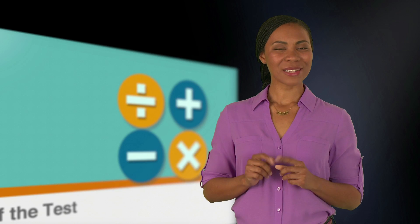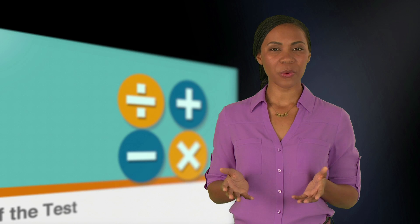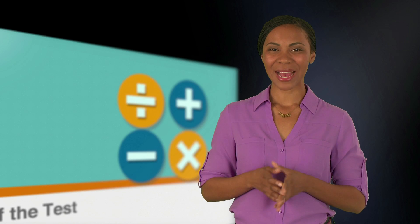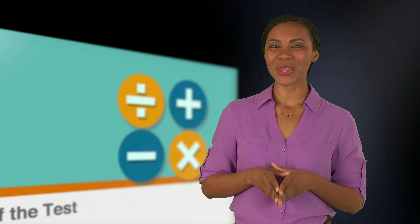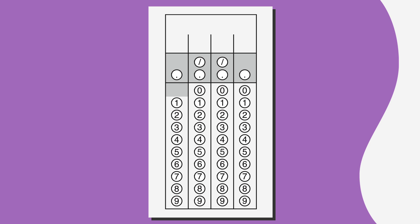Speaking of which, fractions can be tricky because there are multiple ways of showing the same answer. Let's look at how we can enter 2 thirds. You'll want to start by writing your answer, 2 thirds, above the bubbles for your own reference. Then, you'll bubble in 2 slash 3.